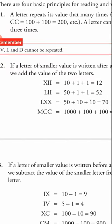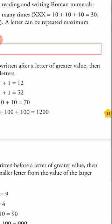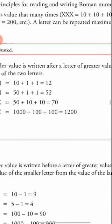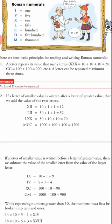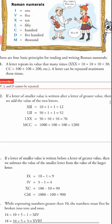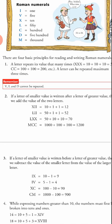The first rule: a letter repeats its value that many times. For example, to write 30, we write X three times — X plus X plus X equals 30. Similarly, CC means 100 plus 100, which equals 200. Keep in mind that a letter can be repeated a maximum of three times.